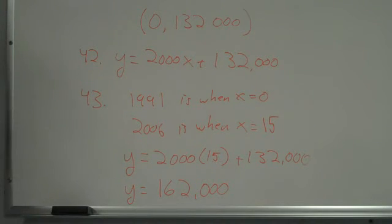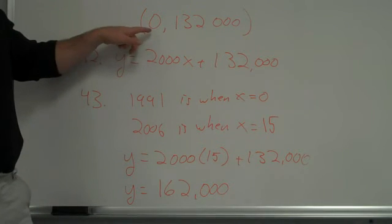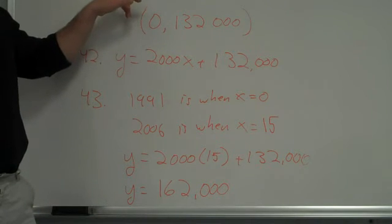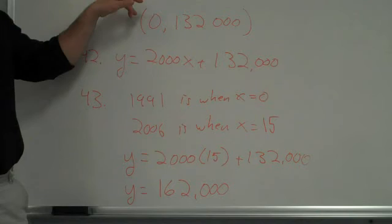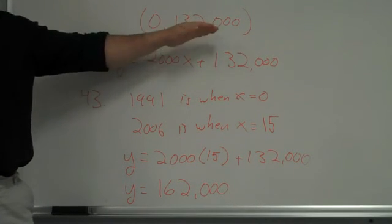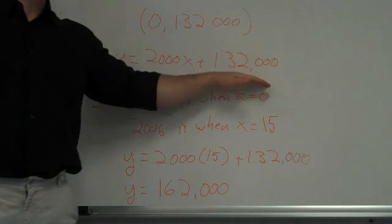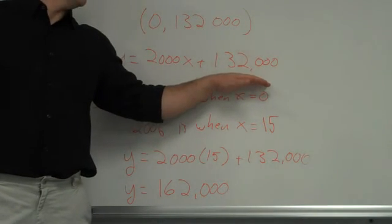162,000 is the final answer for number 43. The thing that really speeds this up is if you notice that they give you the population in 1991, and 1991 is year zero, and you quickly go, oh, if that means it's 0 comma 132,000, this is my Y-intercept. So, that goes in the B spot. That will speed it up for you if you notice that.